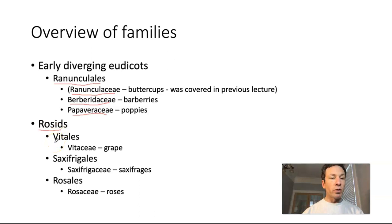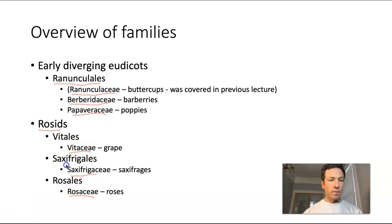The first order we'll talk about is Vitales, which contains Vitaceae, the grape family. We'll also talk about Saxifragales, which contains Saxifragaceae, the saxifrages, and Rosales, which contains the Rosaceae family and the roses.